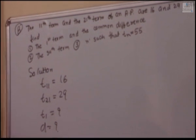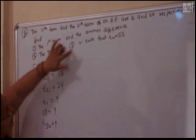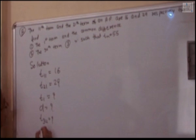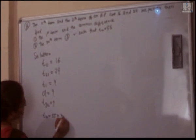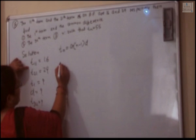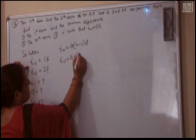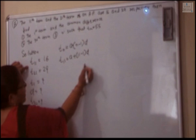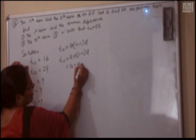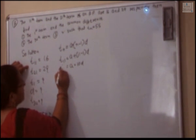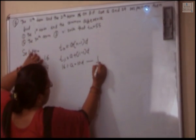We have to calculate D and T34, and also find N such that TN equals 55. For T11, using the formula: A plus N minus 1 into D, with N equal to 11, we get A plus 10D. Substituting T11 equal to 16: A plus 10D equal to 16. This is equation number 1.